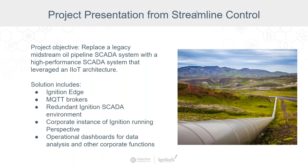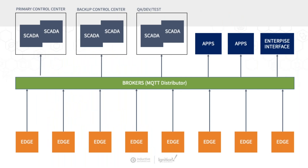The best way to look at this is to see what Streamline built from an architecture perspective. We use MQTT Distributor as our middleware operational backbone — brokers distributed at each control center, sitting at layer 3 and below for Purdue model compliance. Edge nodes are distributed throughout the pipeline system. Communication is through VSAT and cellular, allowing for two communication paths. The edge can swap between communication mediums seamlessly using Sirius Link's MQTT modules, which have path-swapping built into the product.